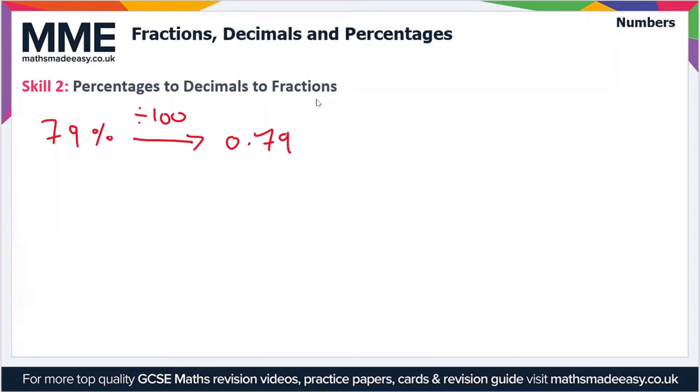Now in order to write this as a fraction, what we're going to have to do is write this over 1. So anything divided by 1 is just the same thing, so at the moment we've just got 0.79 over 1.